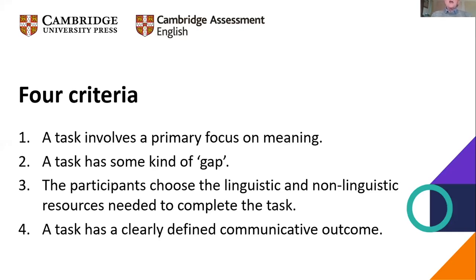Secondly, there has to be some kind of gap. It's usual to distinguish two principal types of gap: an information gap, where one person has information that another person doesn't and the task requires them to share that information; or an opinion gap, where there is some kind of problem and students have to discuss it and come up with what they think is the best solution.